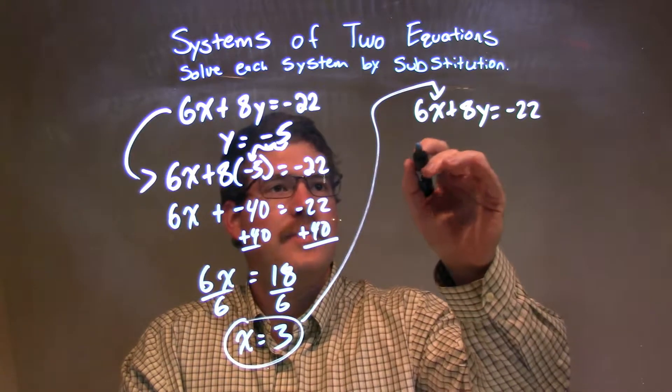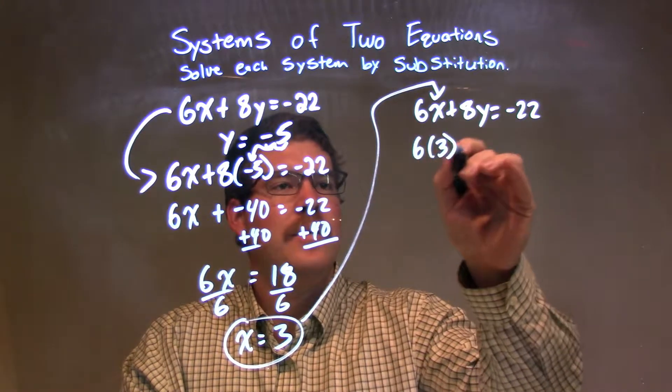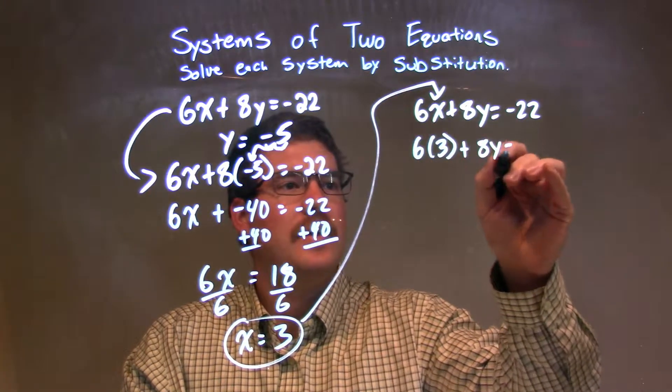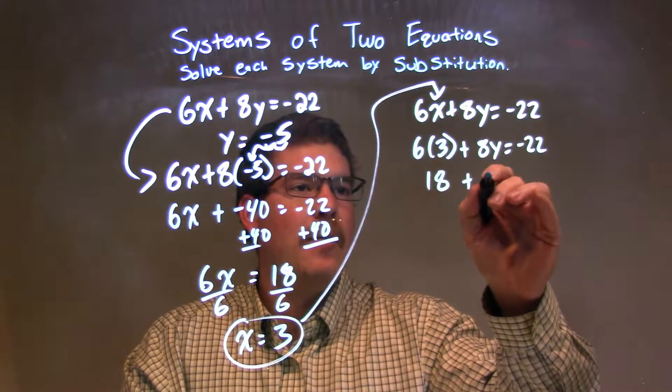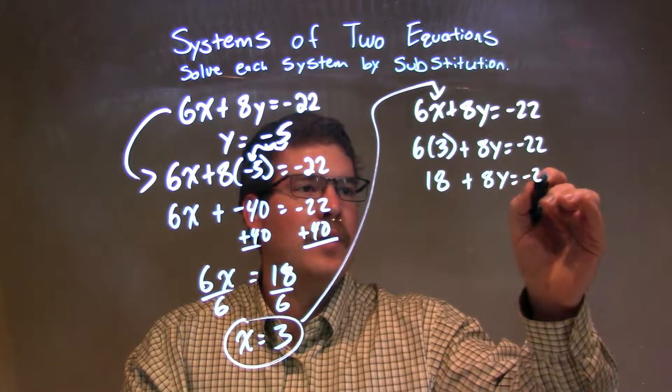3 goes in for x there. 6 times 3, right? Plus 8y equals negative 22. 6 times 3 is 18, and now we add the 8y to it, equals negative 22.